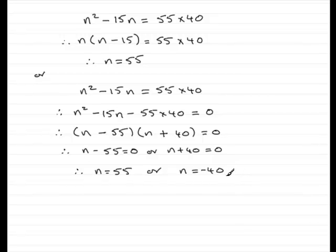But because this is an arithmetic series and n is the number of terms, you can't have negative 40 terms. So we could say that since n has to be greater than 0, therefore, n equals 55.